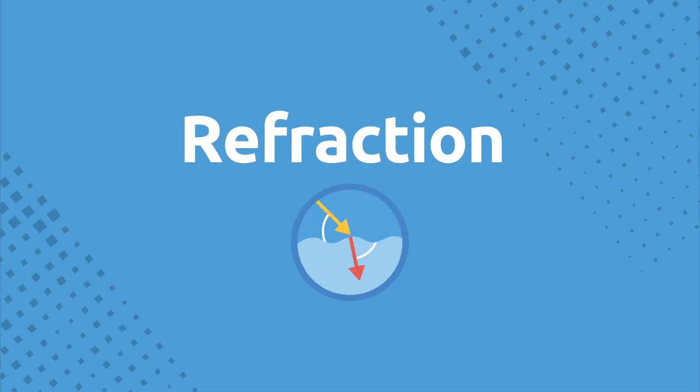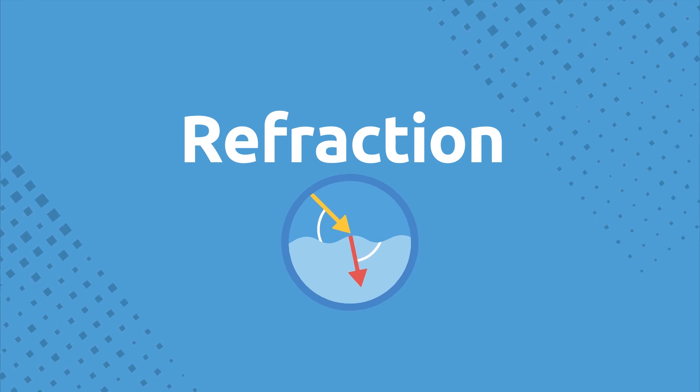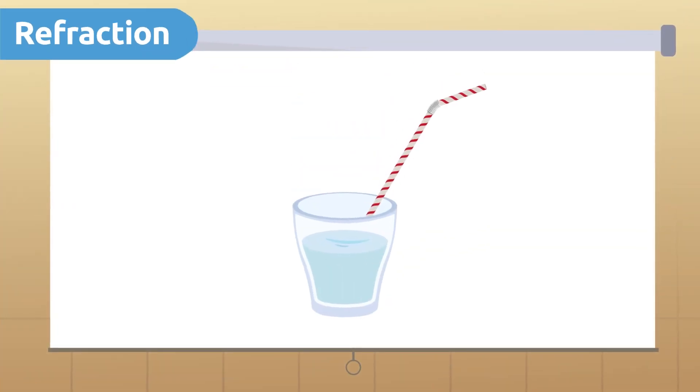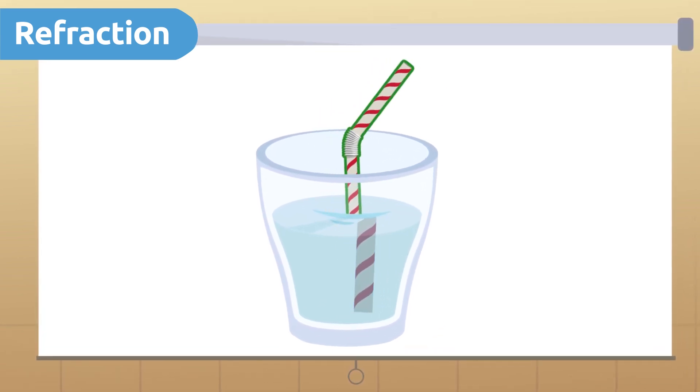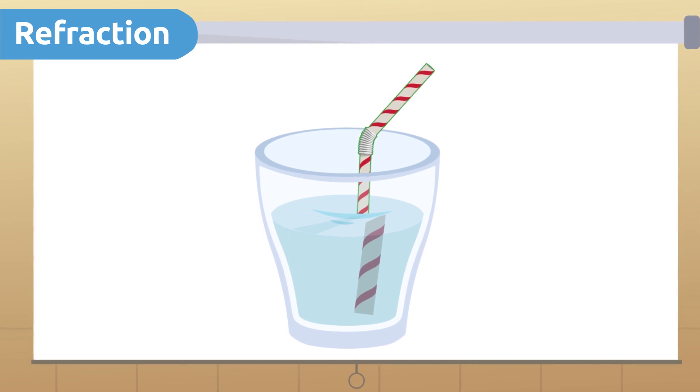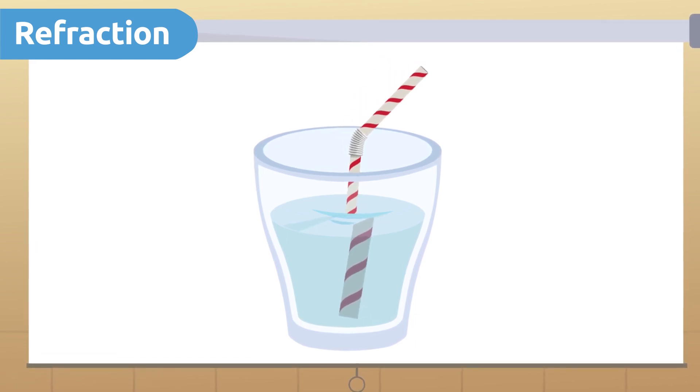Now let's look at another property of light, refraction. Have you ever wondered why, when you put a straw in a glass of water, we see it differently than when it is outside water? This happens because of refraction.